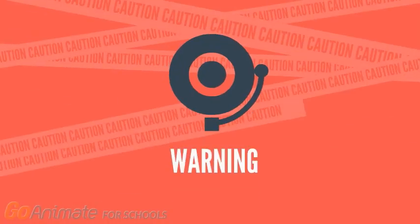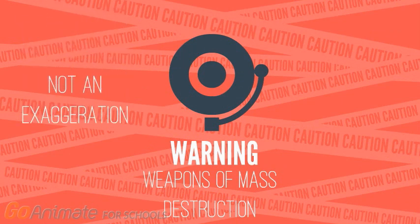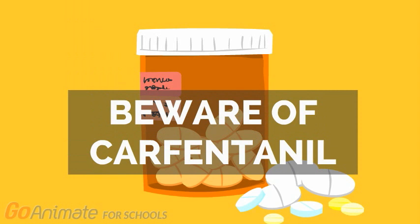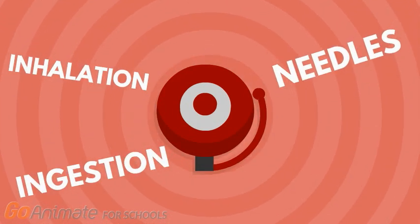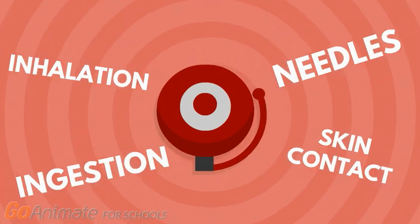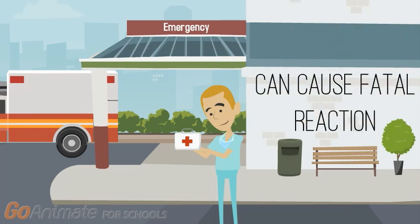Another claim made by the article is that carfentanil can be used as a weapon of mass destruction agent — this is also not an exaggeration. Carfentanil is extremely potent, and its modes of transmission include inhalation, ingestion, intravenous injection, and even absorption through the skin. In fact, carfentanil is so potent that paramedics must wear respirators and protective robes when treating an individual who has potentially come in contact with it. If someone even touches it, it can cause a fatal reaction.